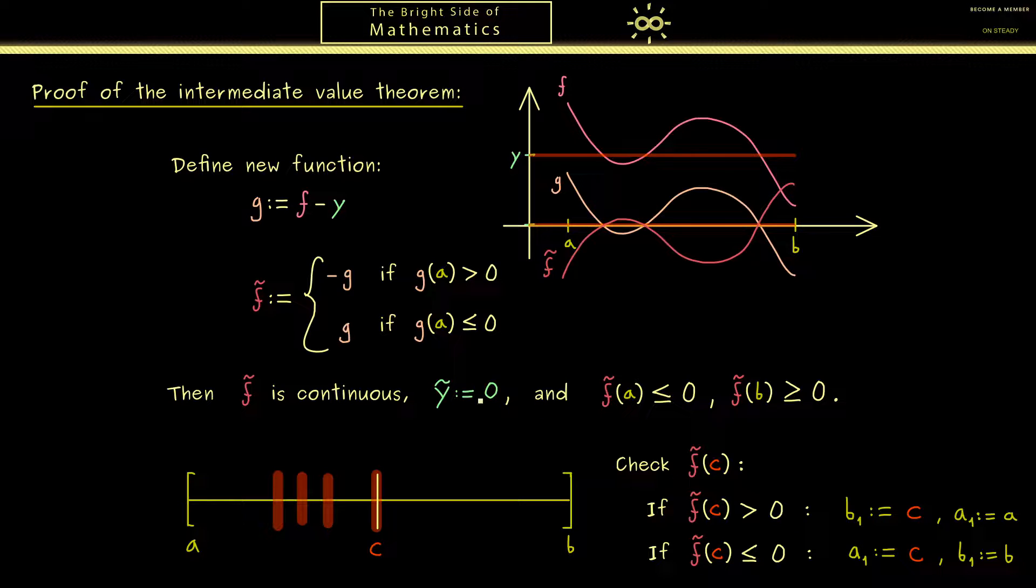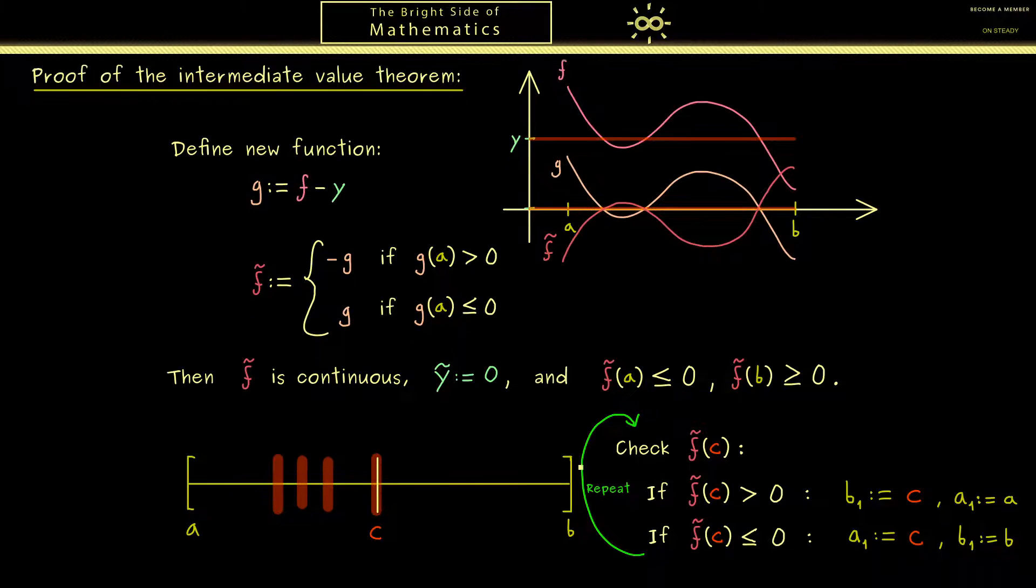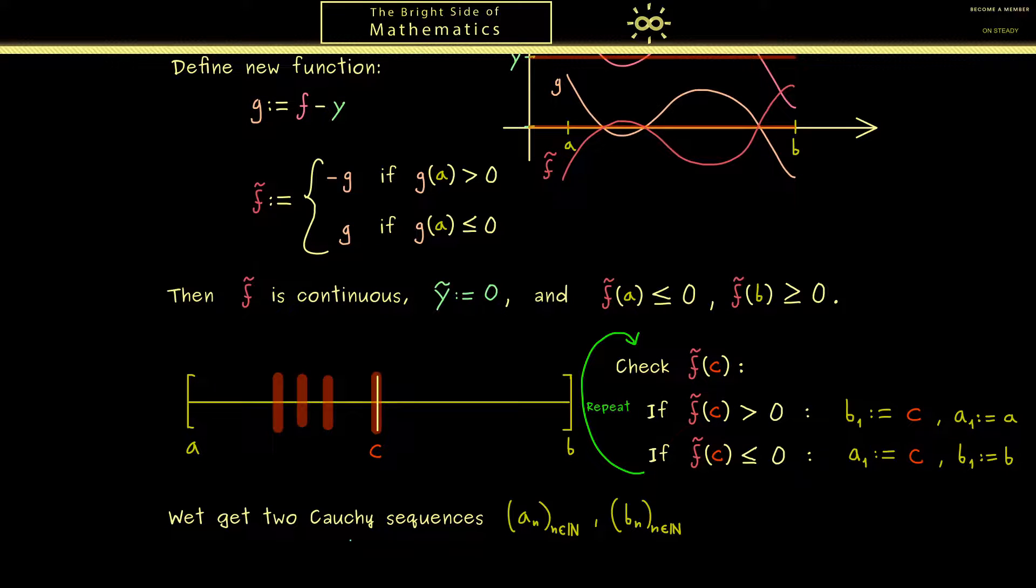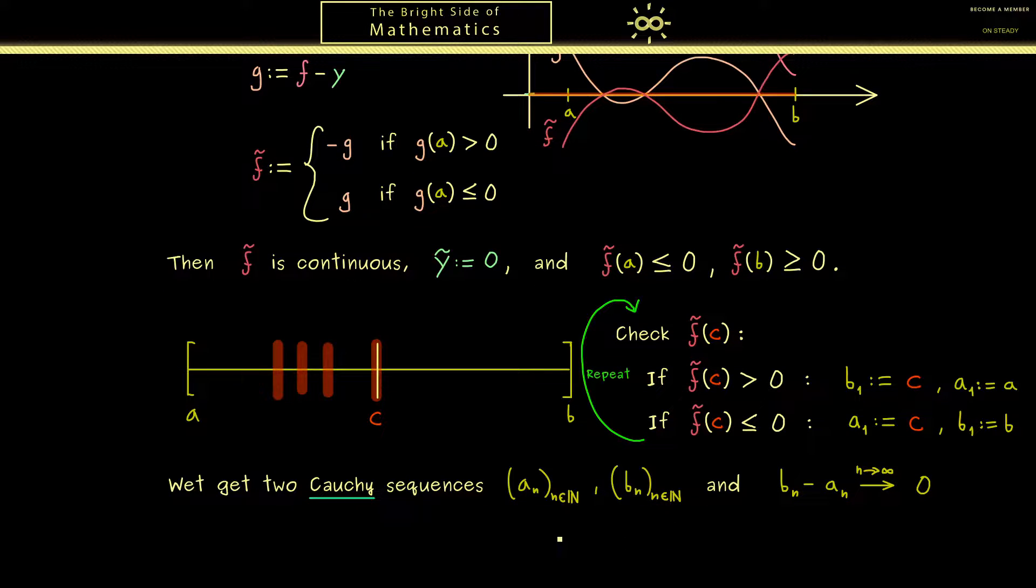This means then that nothing really changes here. We can do the same thing again. Then of course we would define b2 and a2. Then afterwards we would define b3 and a3 and so on. Therefore in the end we get two sequences out, so we have an and bn, and by construction we know they are Cauchy sequences. Moreover we also know that the intervals get smaller and smaller and indeed we know that the length converges to 0.